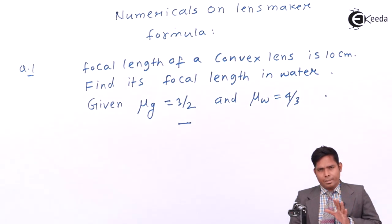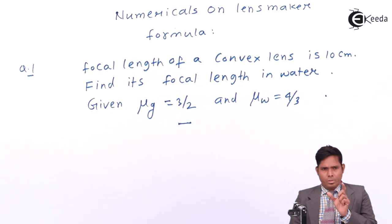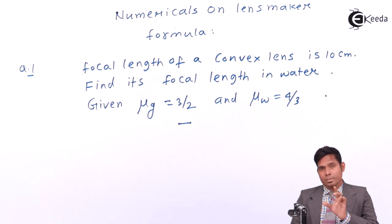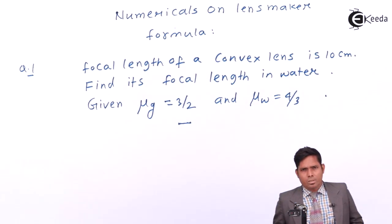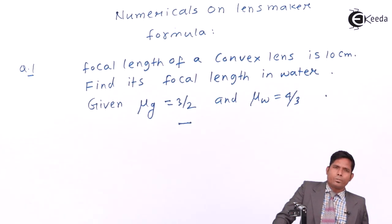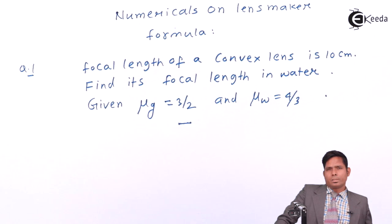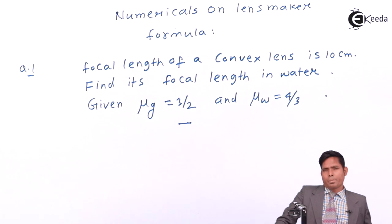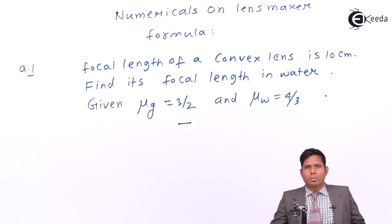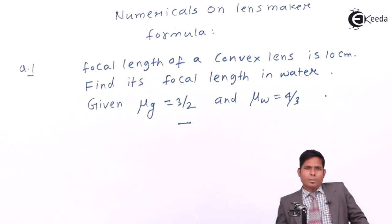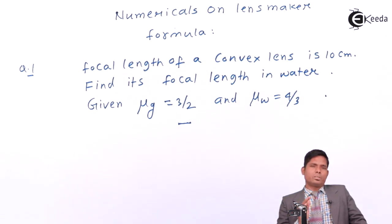That means the lens is made up of glass and it is in air, so when it is in air its focal length is 10. Now this lens is dipped in water, so obviously this focal length will change. Unlike in the case of a mirror where the focal length is independent of the medium, in the case of a lens the focal length depends on the medium in which it is placed. It also depends on the refractive index of the material of the lens and on the radius of curvature.